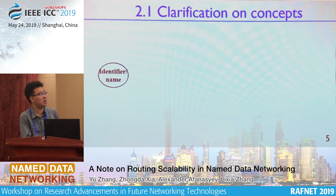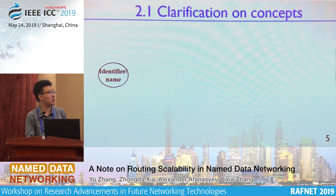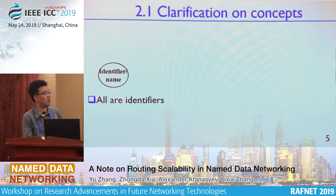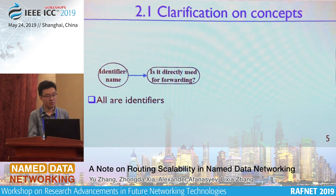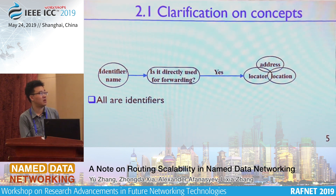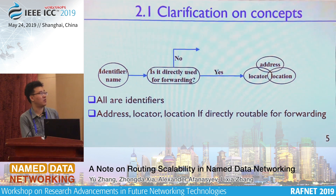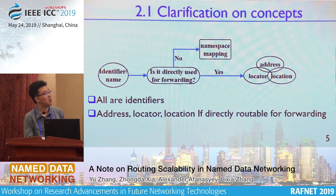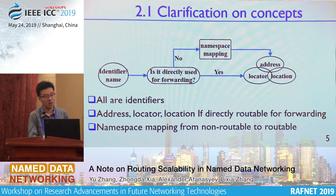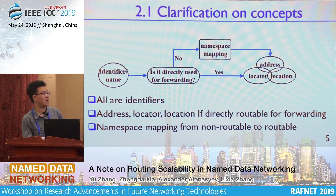Many people think the data name and the IP address are fundamentally different for routing, but that's actually not true. We think that all names — whether data names or IP addresses — are identifiers used to identify something. The difference is whether the name can be directly used for forwarding. If yes, we can call it an address, location, or locator. If not, we need some namespace mapping method to build a bridge from the name to the location. So all addresses and names have no difference for identifying something; the difference is whether they are directly used for forwarding.